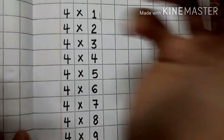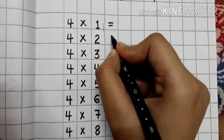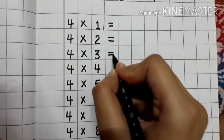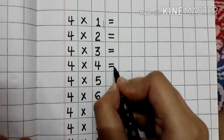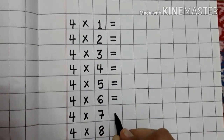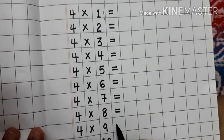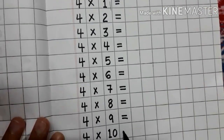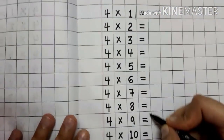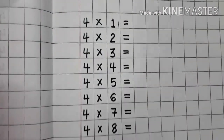Now we will put the sign of equal — two sleeping lines. You have to put it after every number, here in the center of the box. It is also called the sign of equal. Now we have finished this setup and we will write the answers.